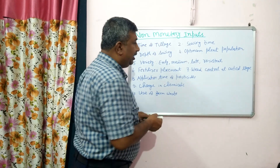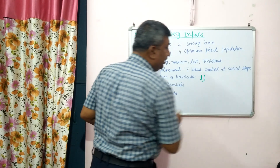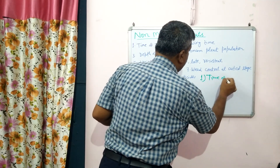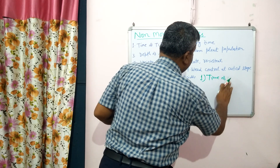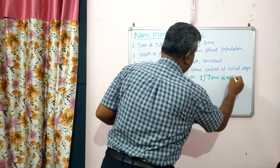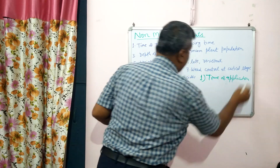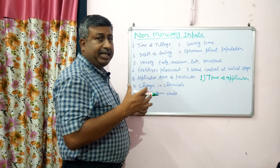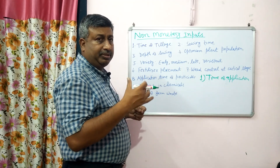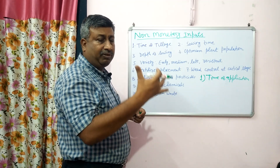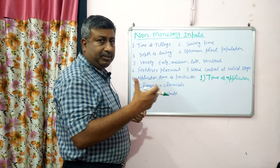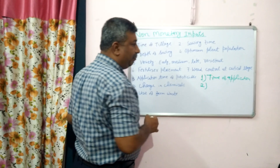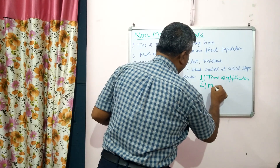If we change the time of application of an input, then its efficiency is increased. Such inputs increase the yield because of increase in efficiency. So when the time of application is changed, there is a positive effect — an increase in yield. Such inputs require a change in time of application.